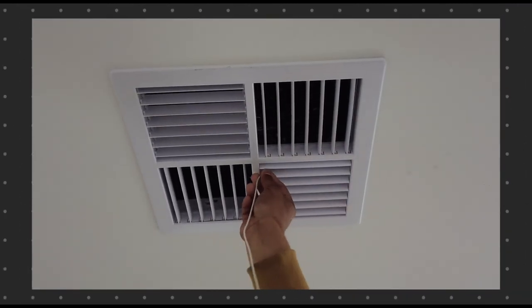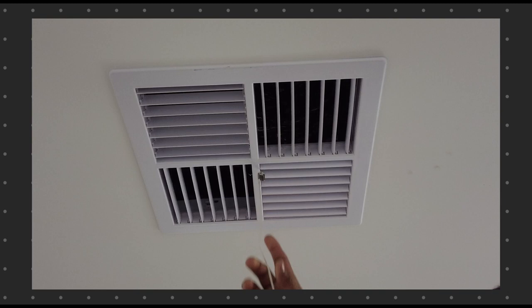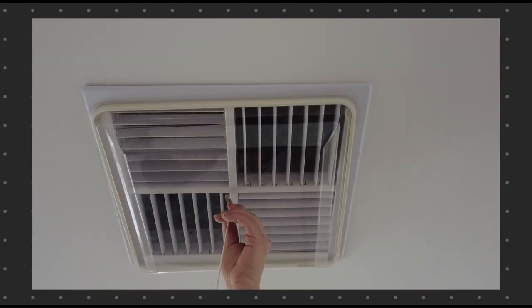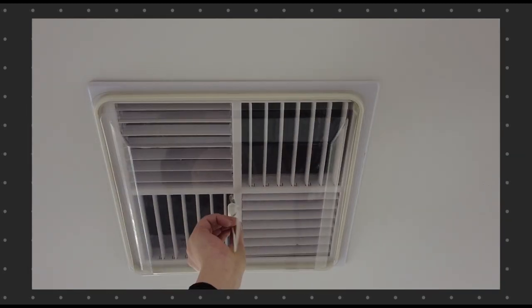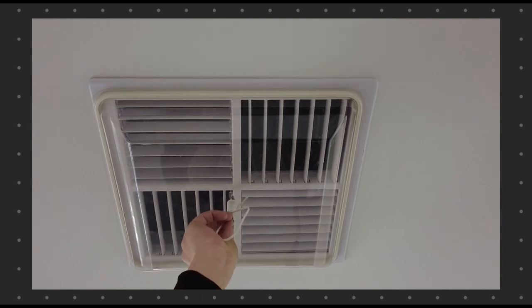To install our evaporative air vent cover, hook the lanyard to your AC grill and secure the unit in place with the cord lock. To hide the dangling lanyard, feed the end into the centre of the vent cover.